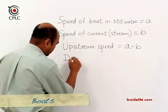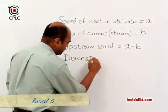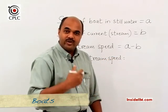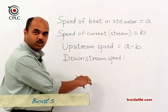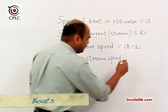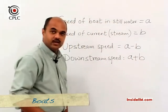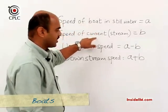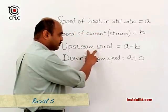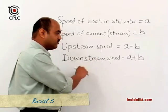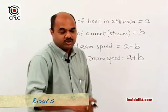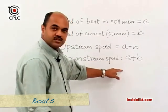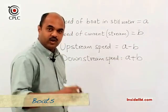We also have the term downstream speed, which means the boat is moving with the current, so the speed of the boat moving downstream is A plus B. If the speed of the boat in still water and the speed of the current are given, we can find upstream and downstream speeds, and use these two formulas to answer questions about time taken.